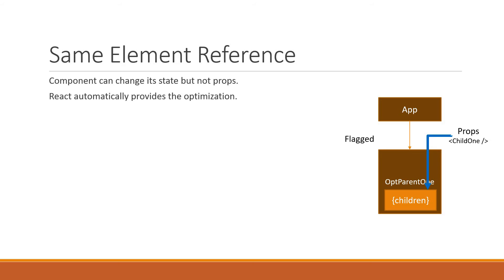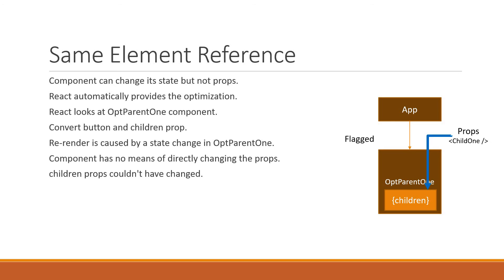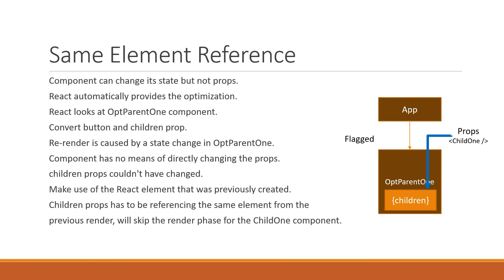You can picture React going about the re-render in the following way. React looks at the optimized parent1 component and says it has to convert the button and the children prop to a React element. React tells itself: this re-render is caused by a state change in the optimized parent1 component. Since this component has no means of directly changing the props it is receiving, the children prop could not have changed. So instead of going through the render phase for the child1 component, React will simply make use of the React element that was previously created, and will skip the render phase for the child1 component.